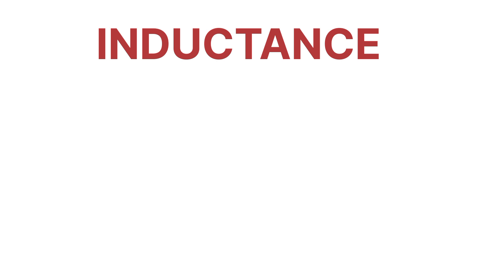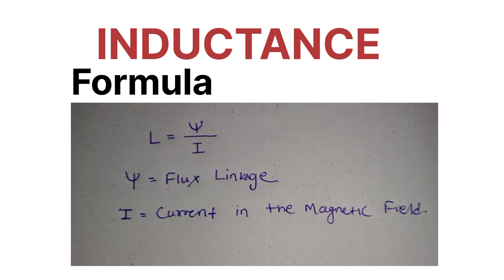The formula for inductance: L equals ψ divided by I. Here L is the inductance, that is self-inductance. ψ is the flux linkage and I is the current flowing through the system or in the magnetic field.